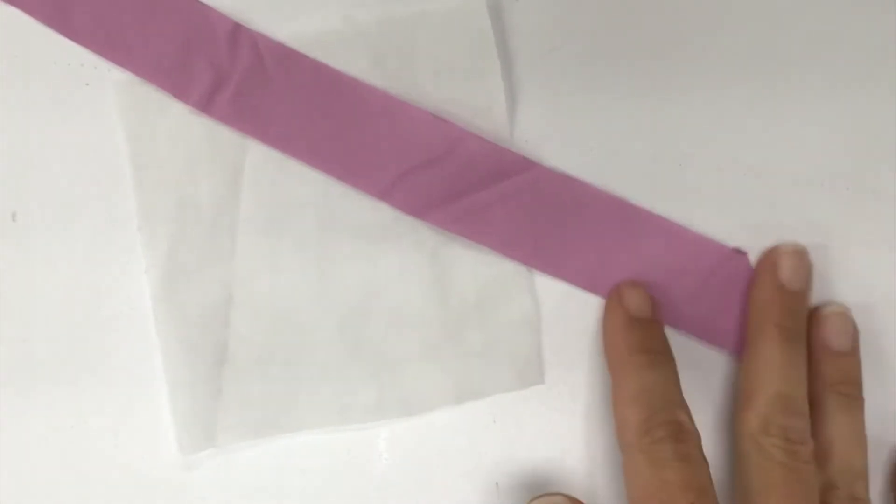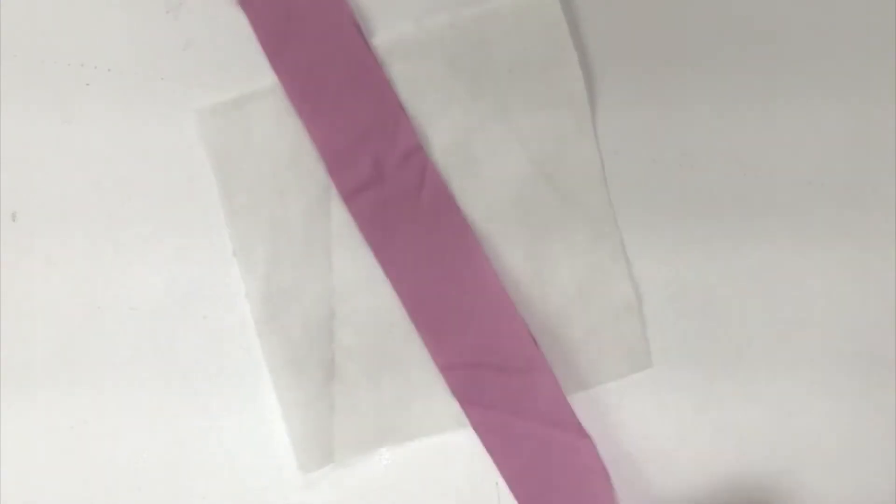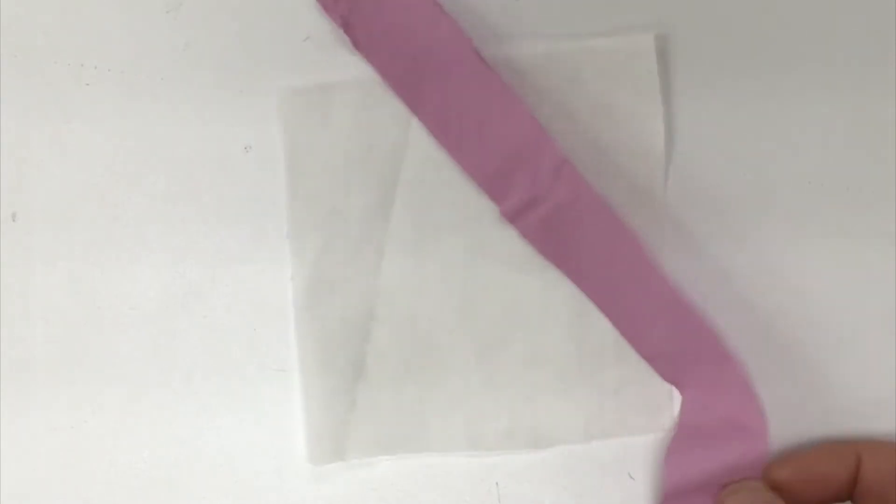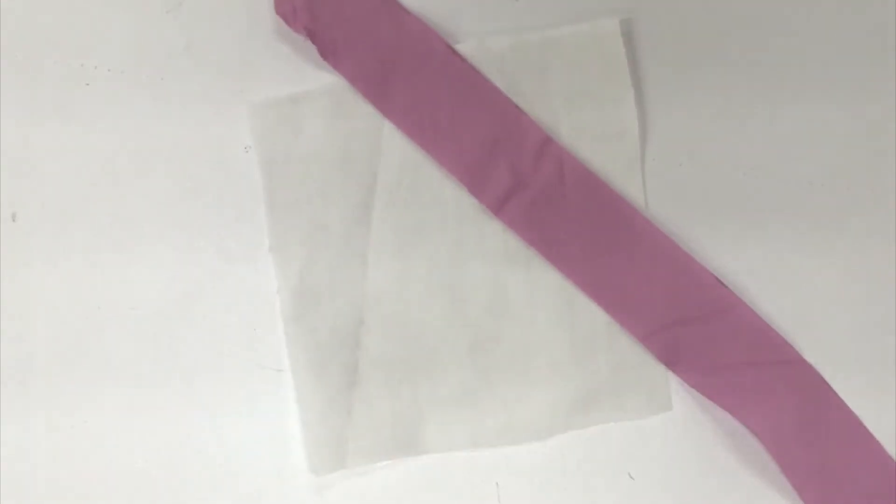If you are going to use bias tape to finish your seam allowance you want to make sure that you have a wide seam allowance. Your textbook recommends minimum three-fourths inch to as wide as an inch and a quarter because the bias tape is going to be taking up some real estate on that seam allowance so definitely plan ahead for that.